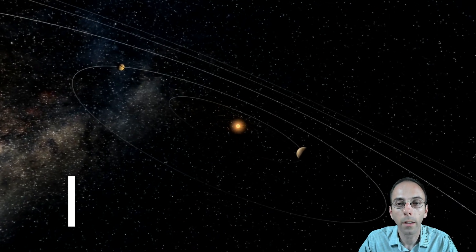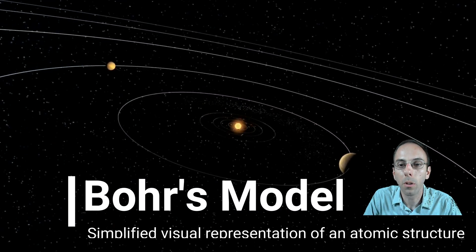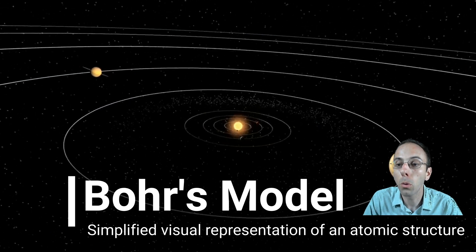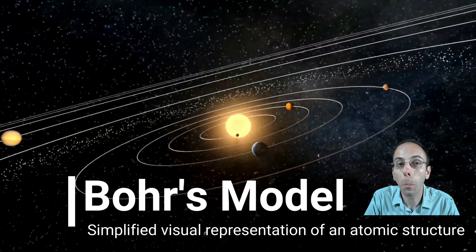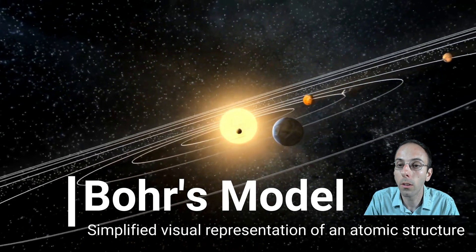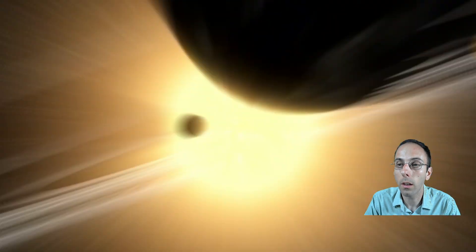So when we're looking at this Bohr's model, what does it kind of describe? What does it look like? Well, it's a simplified visual representation of the atomic structure. And a lot of times it's called the planetary model because it's related to how the planets orbit the sun, as we can kind of see here represented.